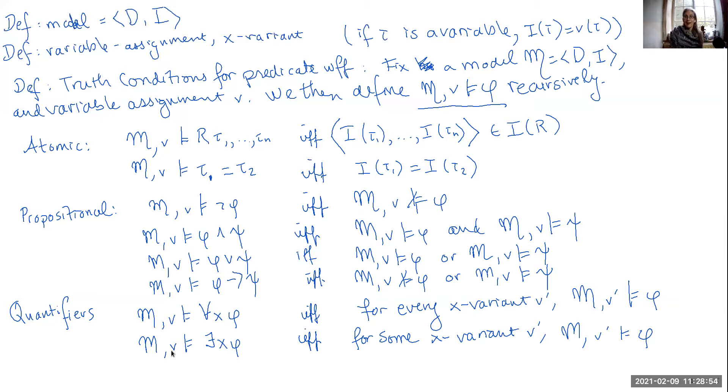It doesn't matter what X gets assigned to on this particular variable assignment. In order for the existential statement to be true, there has to be something that X could be assigned to that makes the sentence true. It could be that V already assigns X to the object that makes the sentence true, but it doesn't have to. All it needs to be is that we can find something in our domain that makes the sentence true, and then we can say the existential statement is true. So this is the definition.